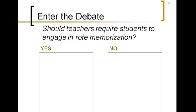The idea with the classical model is that if you fill a child with information during that first stage — even if they don't understand it perfectly — then in the later stages they'll have that information to draw from as they become able to make connections. So instead of just memorizing when a certain war happened, you can later talk about why it happened and discuss multiple perspectives. There definitely is a time and a place for memorization, and if rote memorization is a first step to later making deeper connections, that's a good thing.